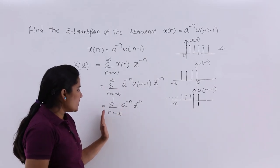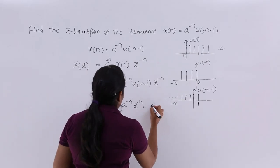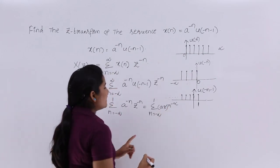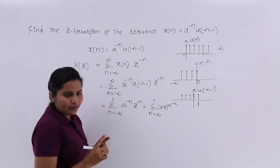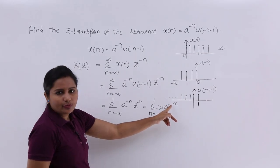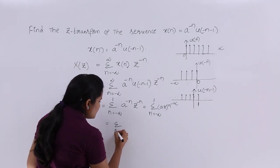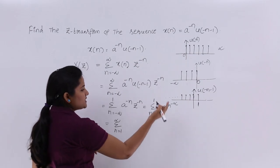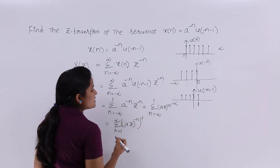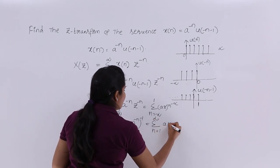So we now have summation from n equals minus infinity to 1, of a power minus n times z power minus n, which equals summation from n equals minus infinity to 1, of (az) to the power minus n. To reverse the limits, since we already have a negative power, we can write the positive power — summation from n equals 1 to infinity, of (az) to the power n.